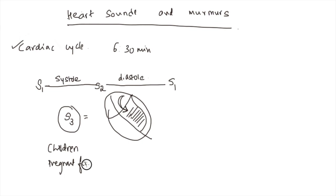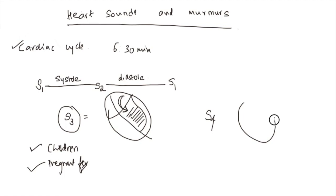S3 is physiological in children and in pregnant females, because the cardiac output is increased and the heart rate is higher - it's an active phase of life. However, if S3 is found in adult males, it is pathological.